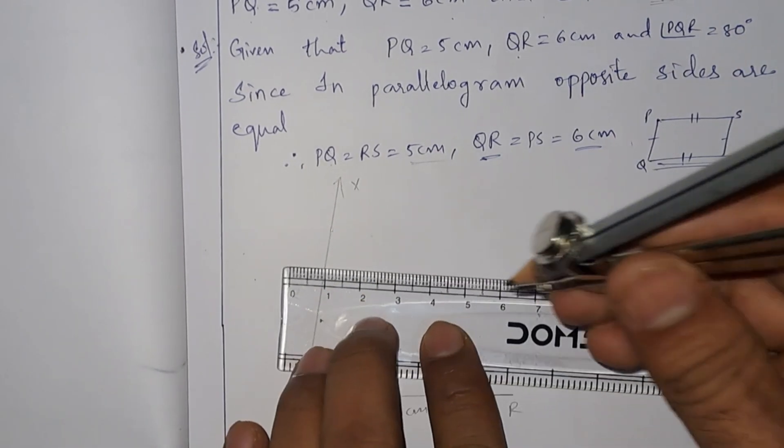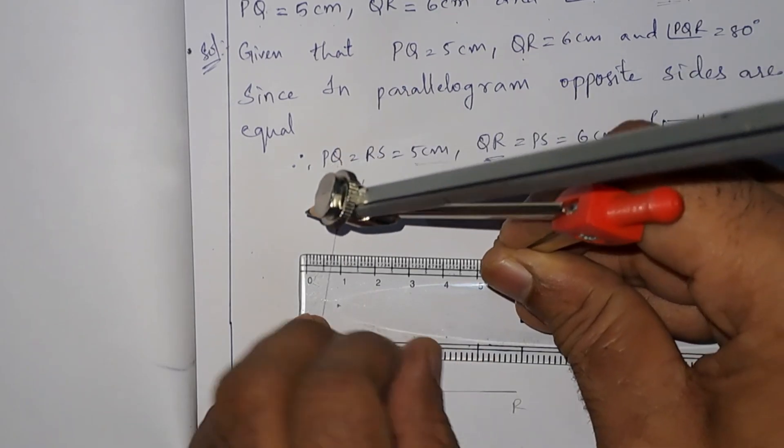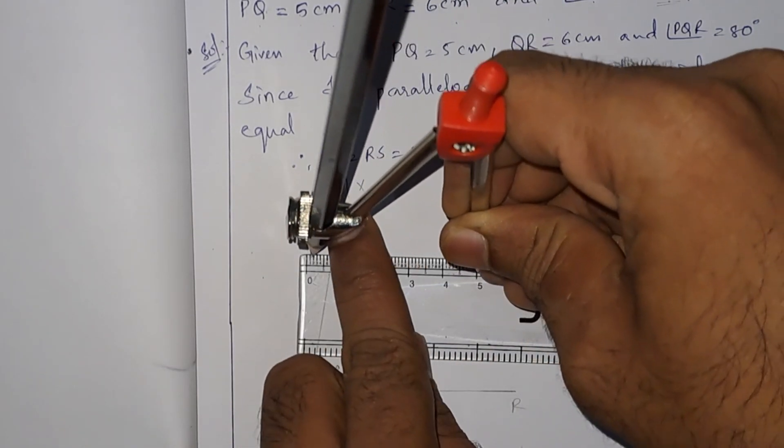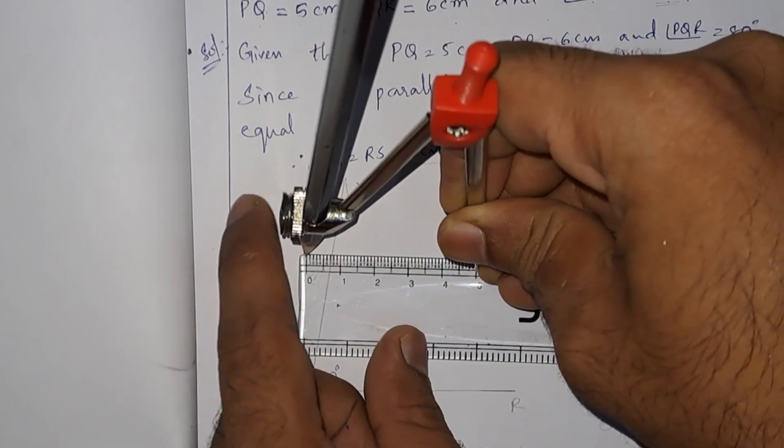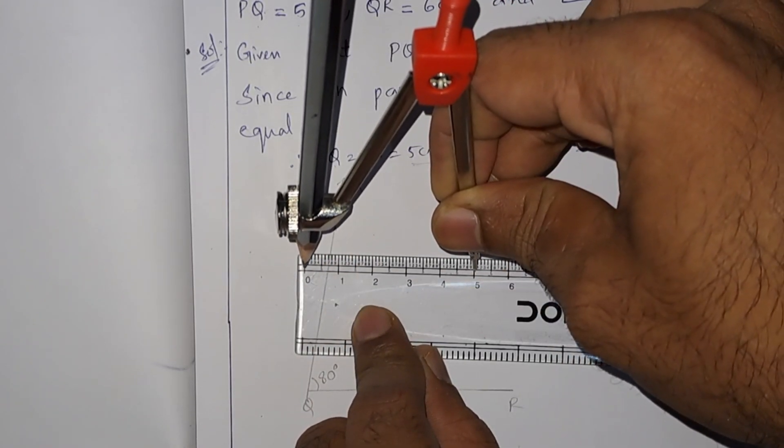Let us take the radius of 5 centimeters. Now this is 5 centimeters.